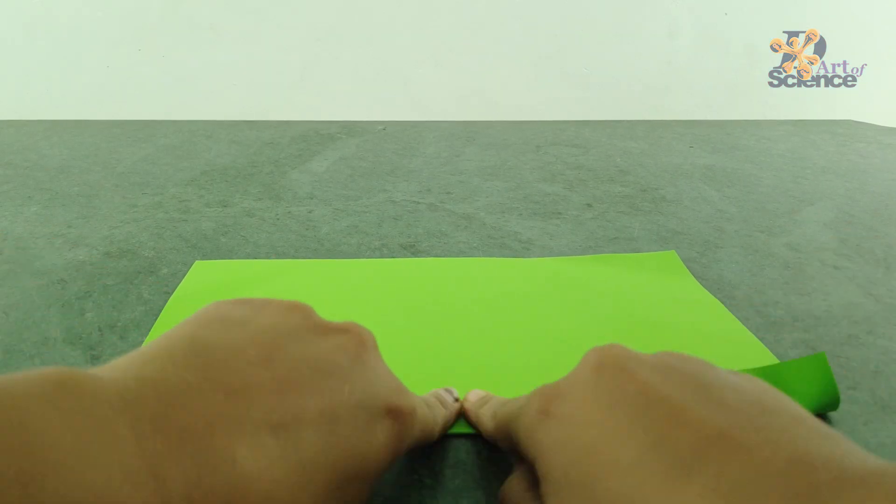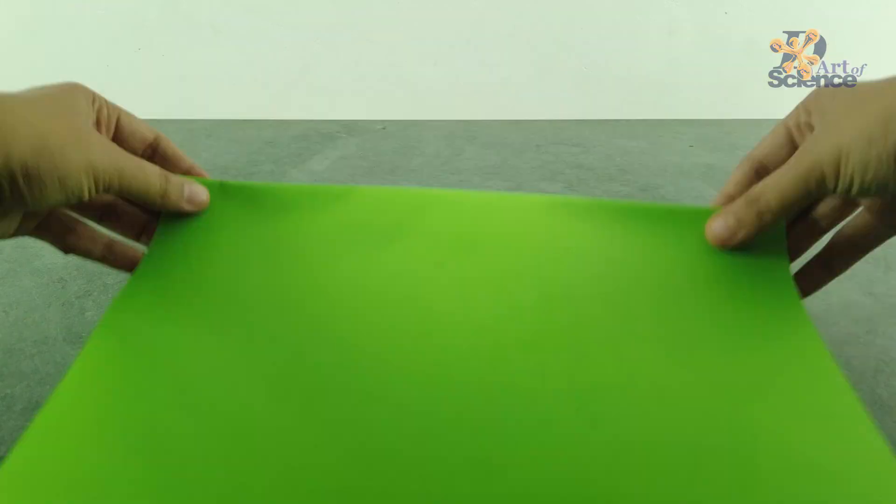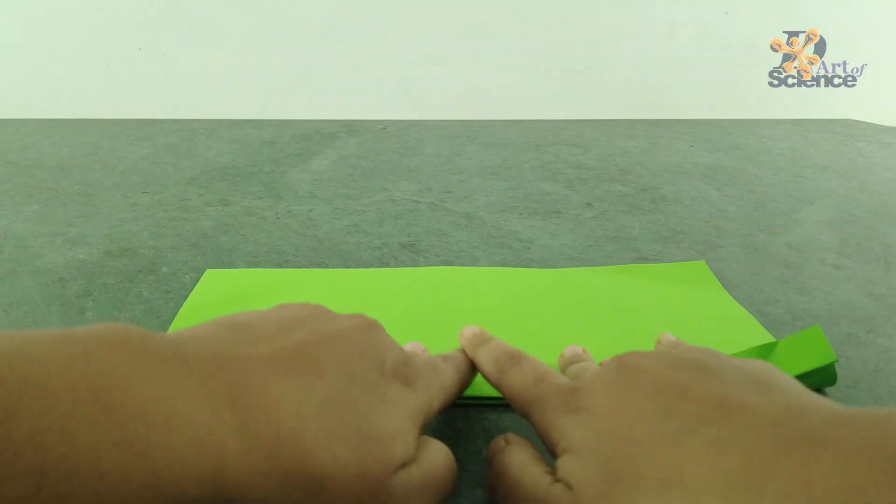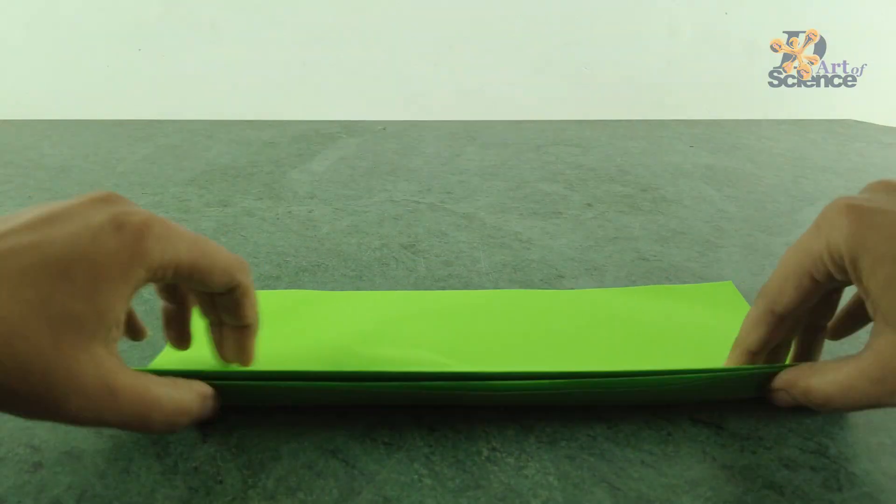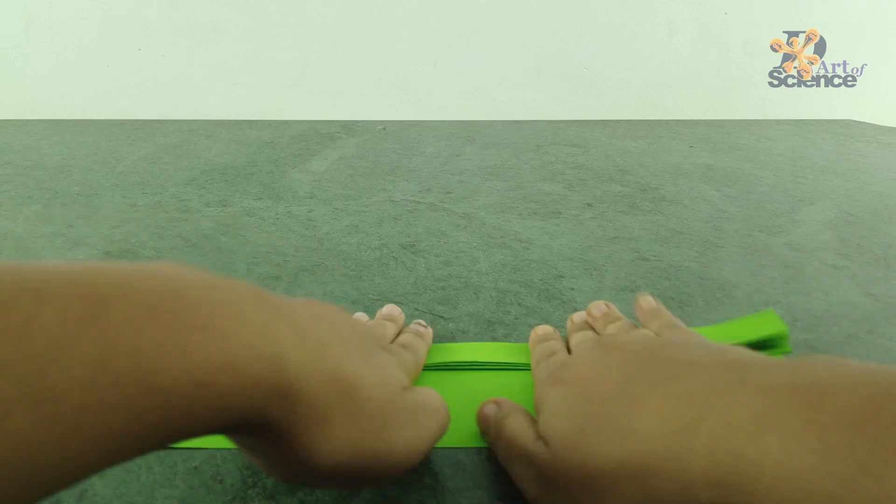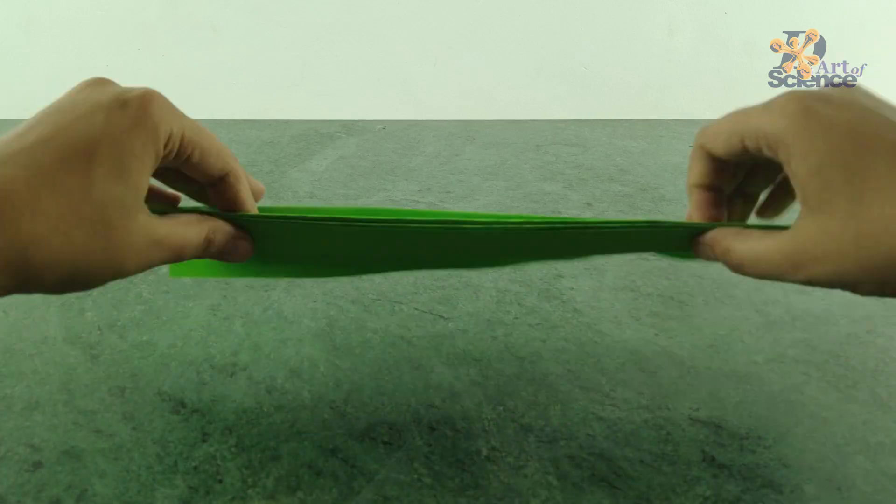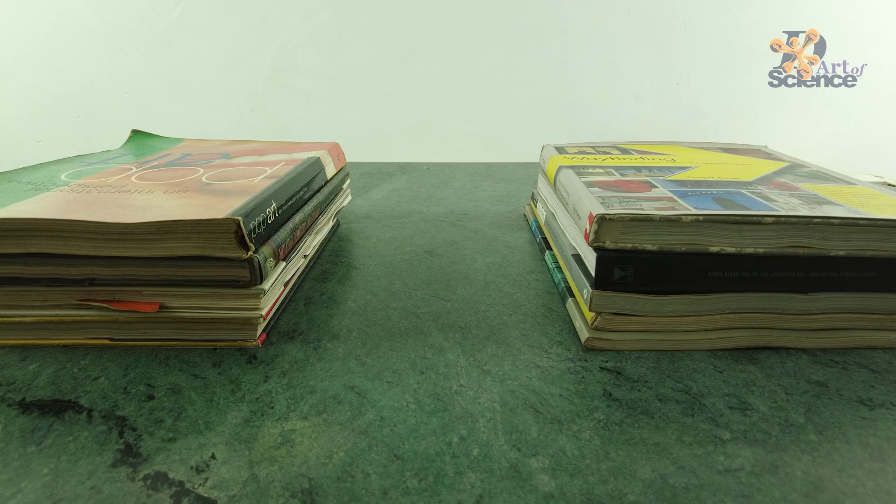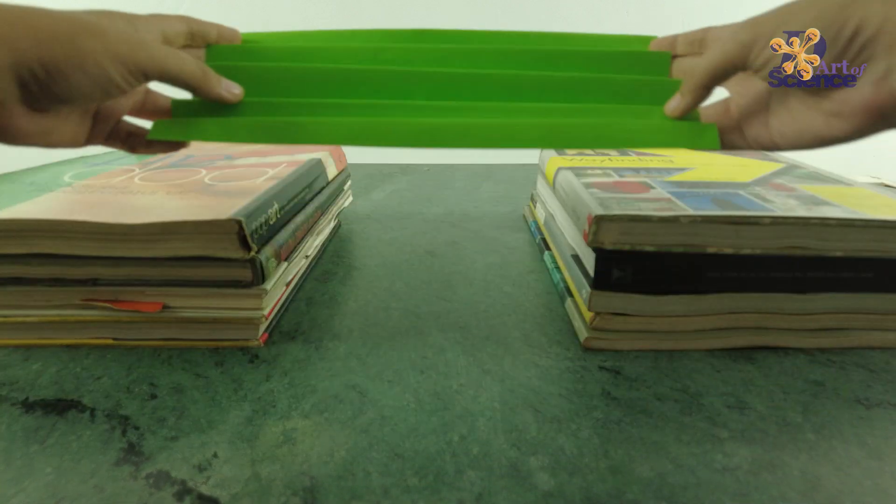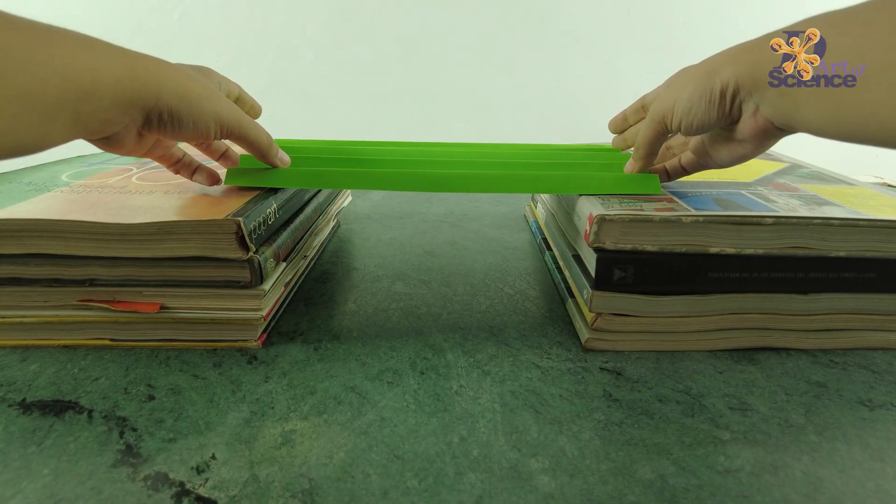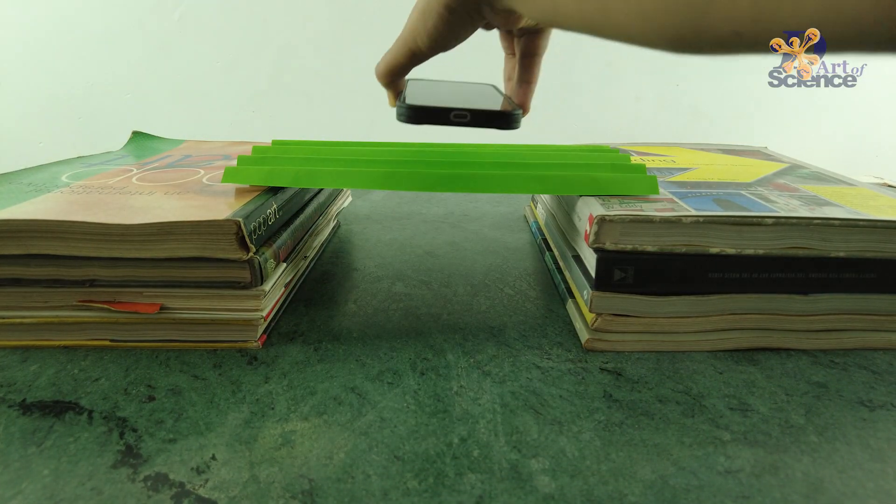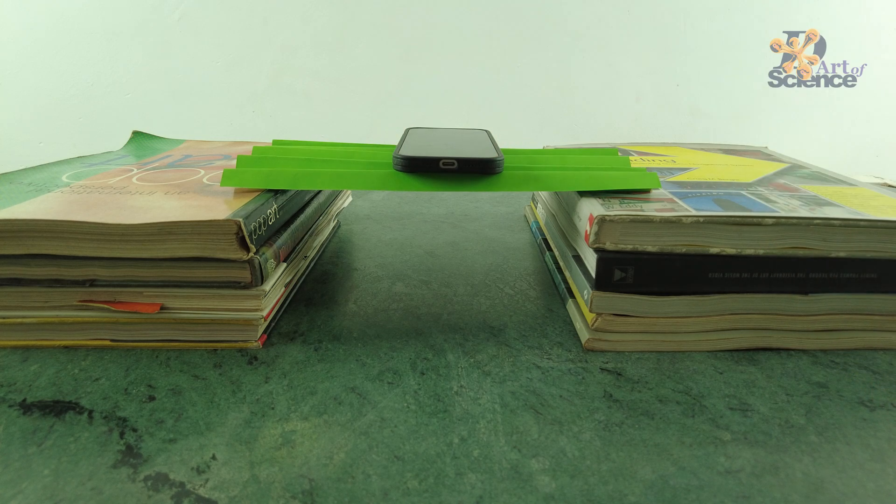The solution was astoundingly simple. All we have to do is fold the paper in a fan or an accordion style like this. Then, when we open it and keep it on top of these books, without even keeping any kind of weight of the books on top of the paper, the phone very easily balances on top of it.